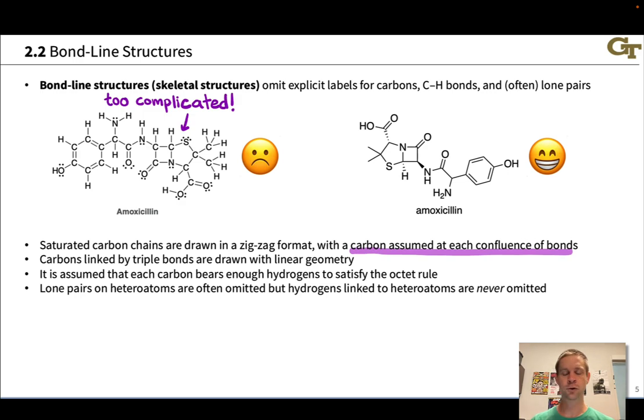The first thing that bond line structures do is take every carbon atom and basically just erase it, saying that at every confluence of bonds, everywhere where bonds come together, there is a carbon located there.